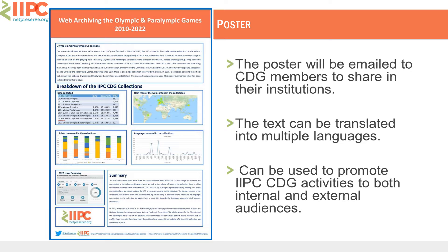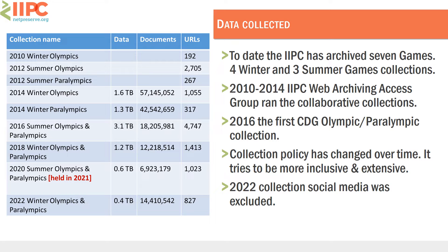Here is a bit more detail about the data we've collected. We don't quite have figures for the terabytes or the documents collected for the first two collections, as they were done with different technology. To date, the IIPC has archived seven games — four winter games and three summer collections — from 2010 to 2014. The IIPC Web Archiving Access Group ran these collaborative collections using a different platform to the Archive-It platform we currently use.